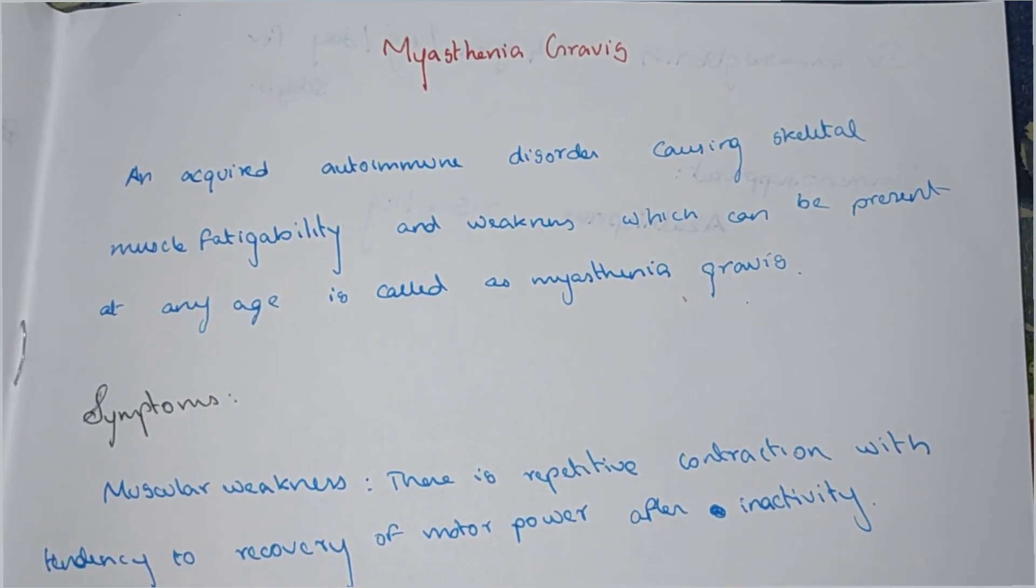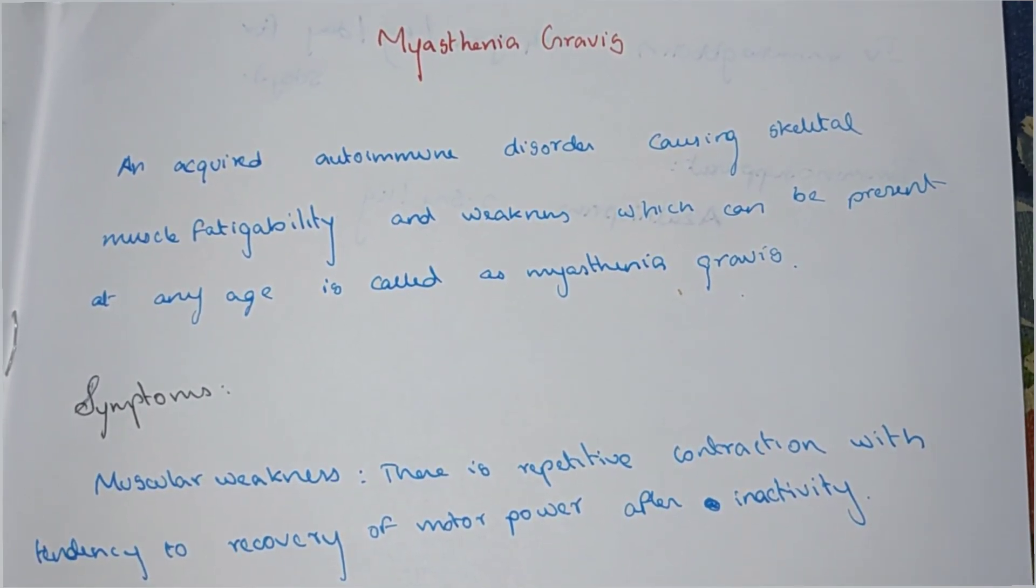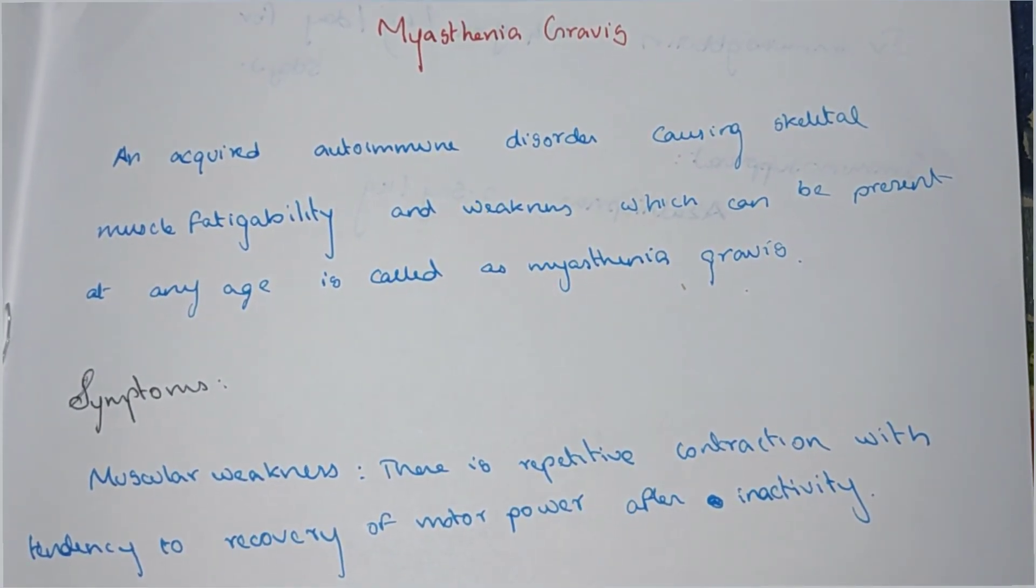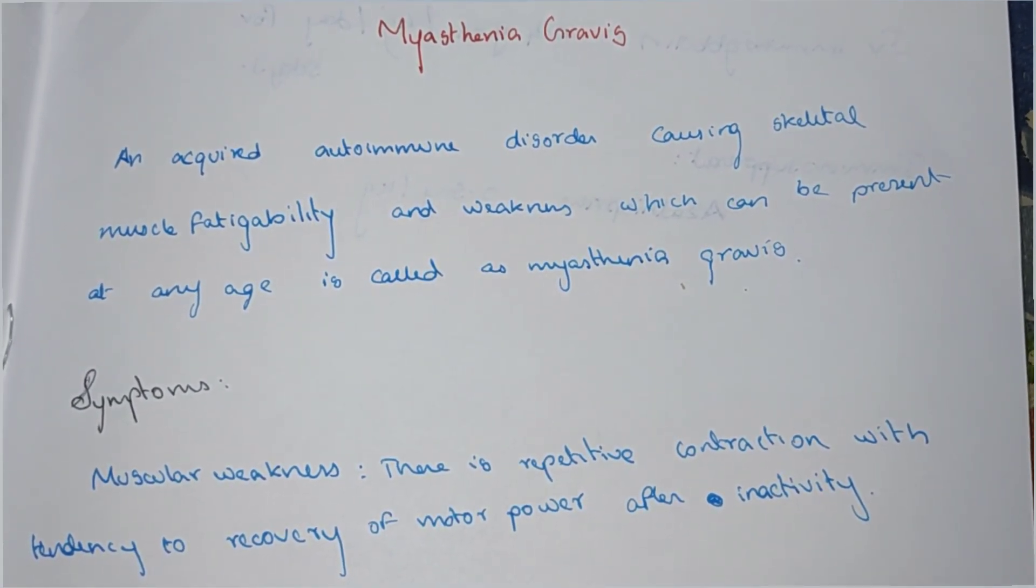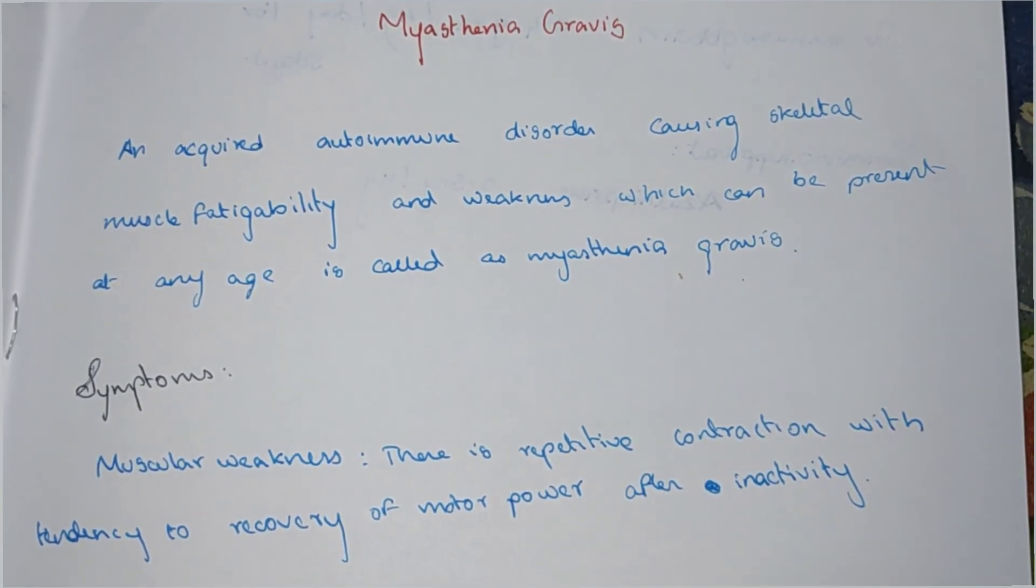Hi everyone, welcome to Medicine or YouTube channel. In this video I want to discuss myasthenia gravis in Tamil. Myasthenia gravis is an acquired autoimmune disorder causing skeletal muscle fatigability and weakness.